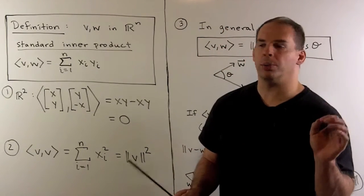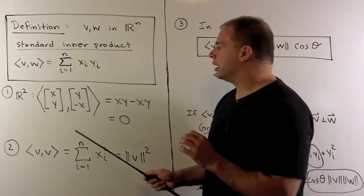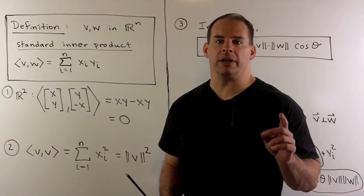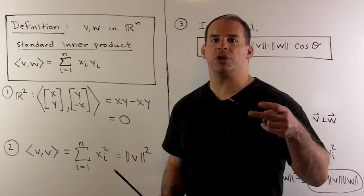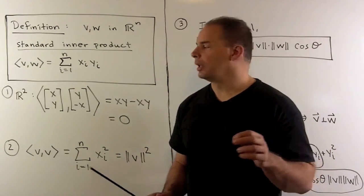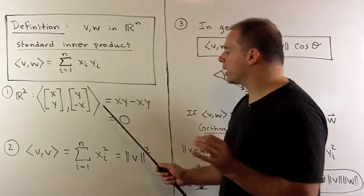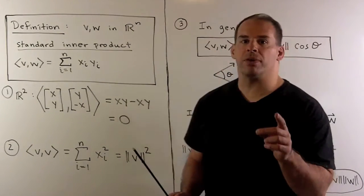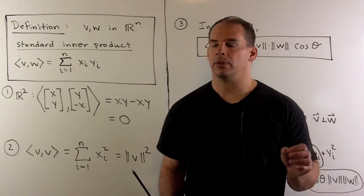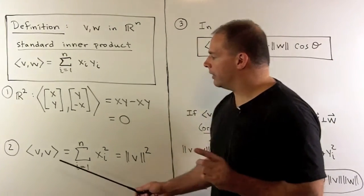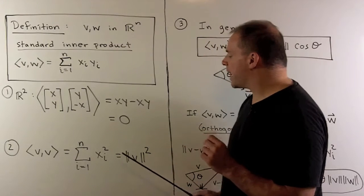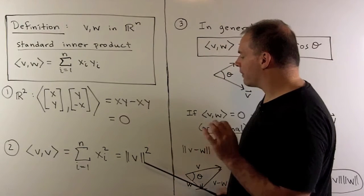For R2, if I have a non-zero vector (x, y), a recipe for finding a perpendicular vector is just to switch the entries and put a minus sign on one of them. If we take the inner product, what comes out is zero, confirming our perpendicular result. On the other hand, if we take the inner product of a vector with itself, what comes out is the length of our vector squared.